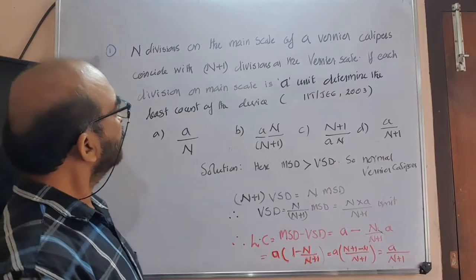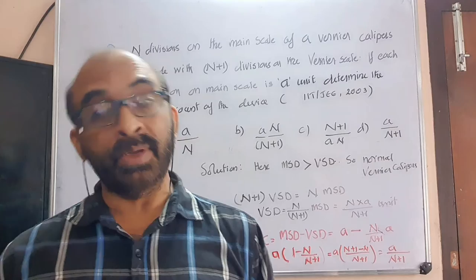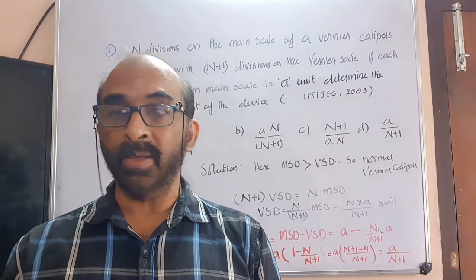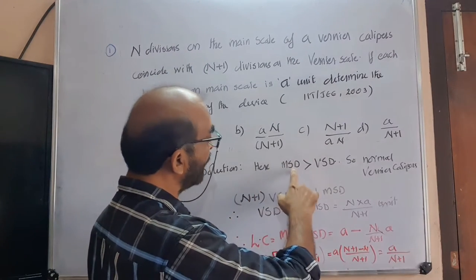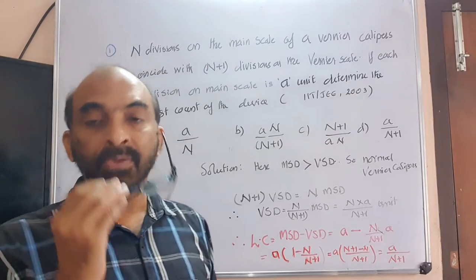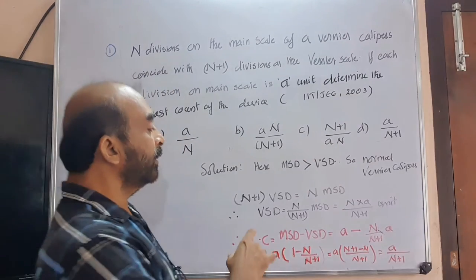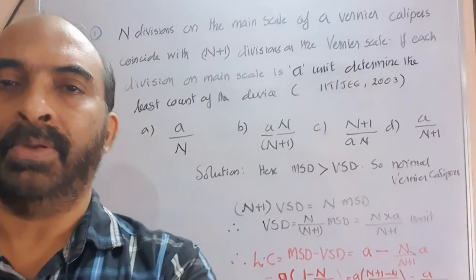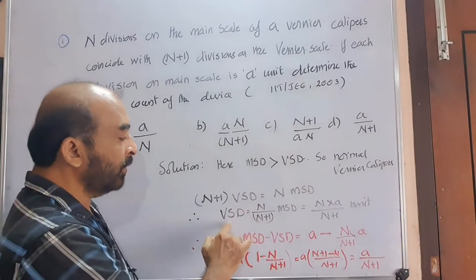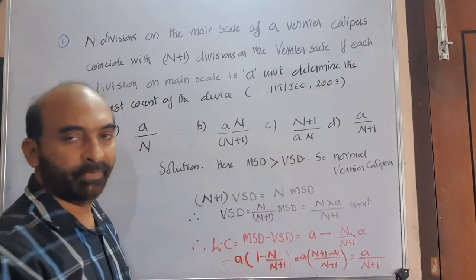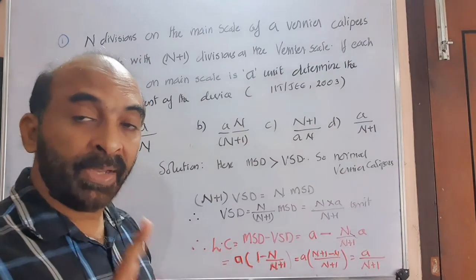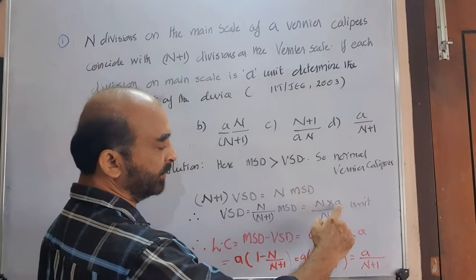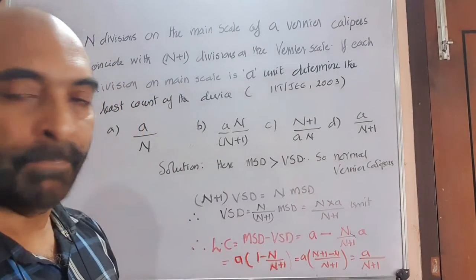Here it is mentioned that N main scale divisions coincide with N plus one vernier scale divisions, meaning vernier scale division is smaller than main scale division. So it is a normal vernier caliper. Given: N plus one vernier scale divisions equals N main scale divisions. So one vernier scale division equals N divided by N plus one main scale divisions. Each main scale division is given to be A units. So one VSD equals NA divided by N plus one.